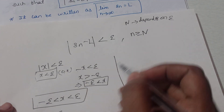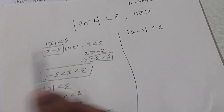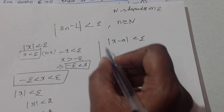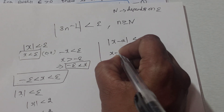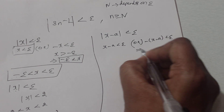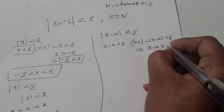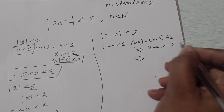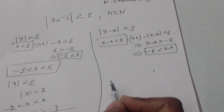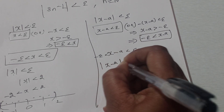Similarly, mod x less than epsilon means x takes the value in the open interval minus epsilon to plus epsilon. Now, mod of (x minus e) less than epsilon means x minus e is less than epsilon, and also minus of (x minus e) is less than epsilon. Rearranging the second inequality, we get minus epsilon less than x minus e, giving us minus epsilon less than x minus e less than epsilon, which means modulus of (x minus e) less than epsilon.